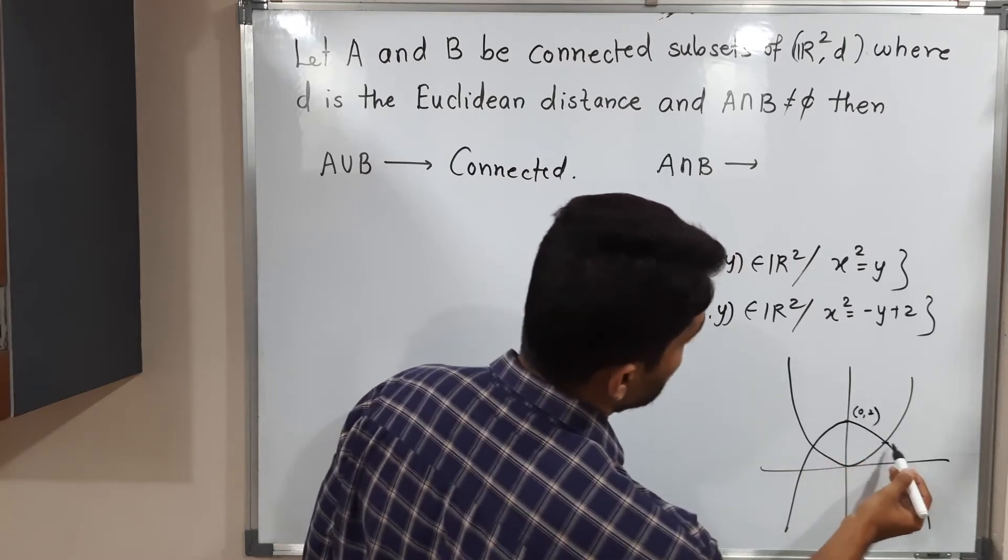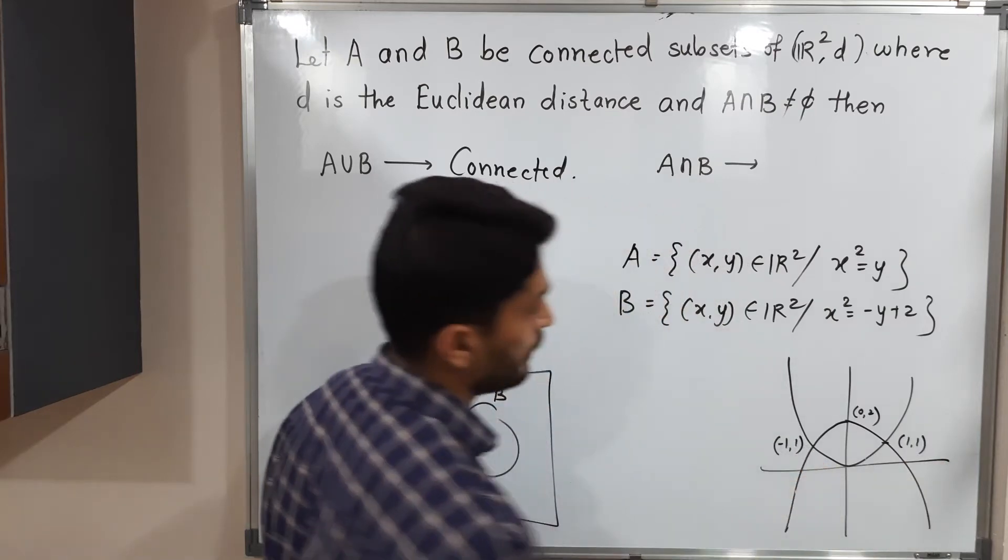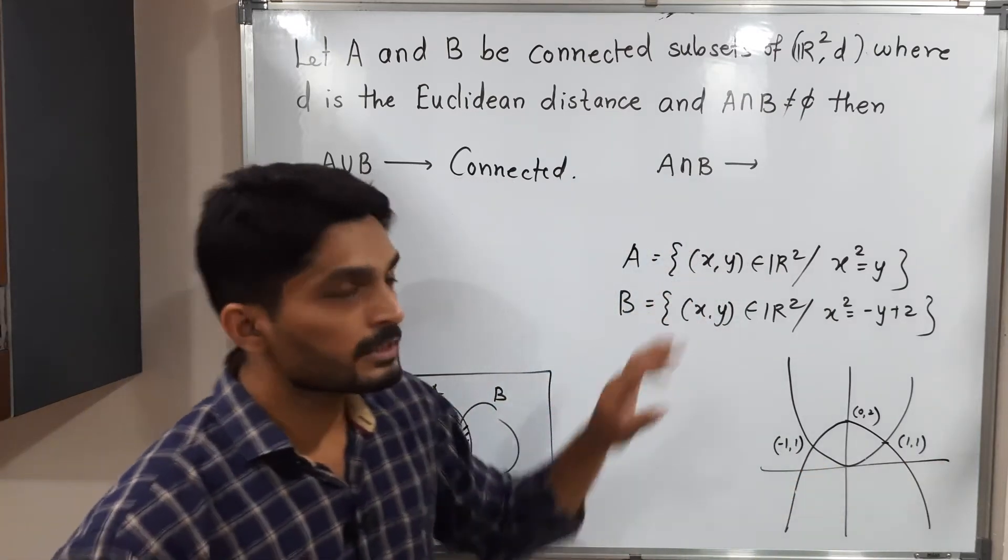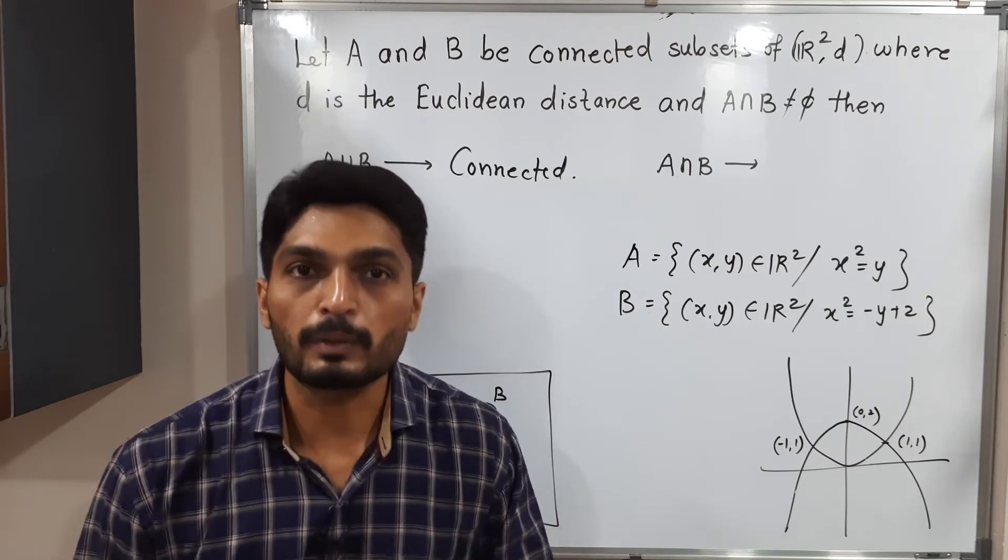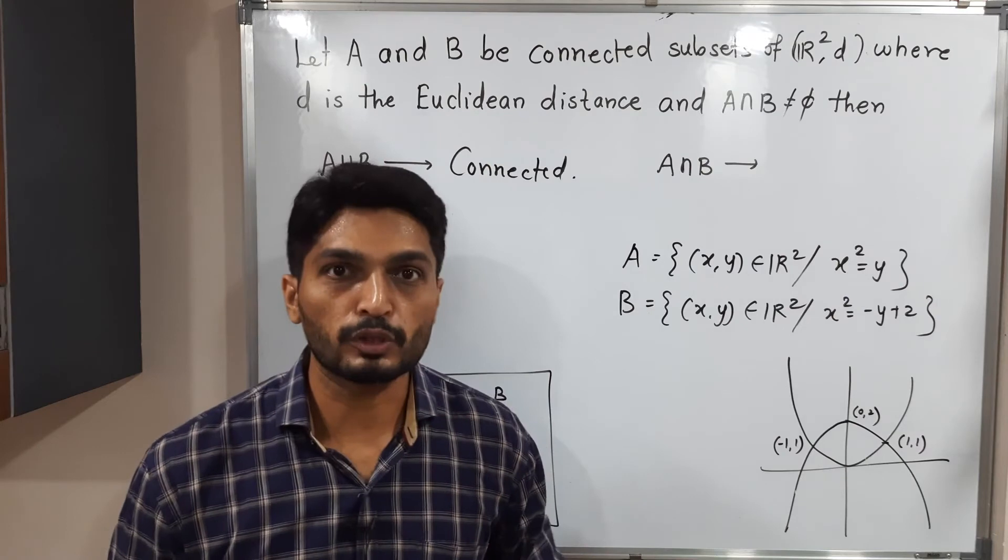So these two parabolas intersect each other at point here (1,1) and here (-1,1). These two parabolas are connected sets. The first parabola is connected and the second parabola is also connected.